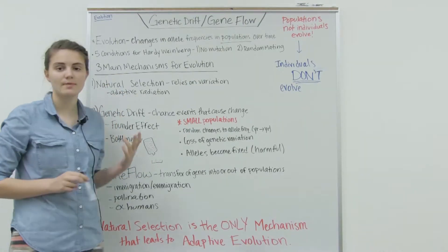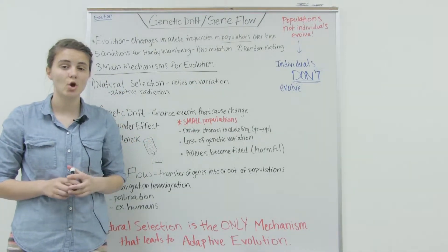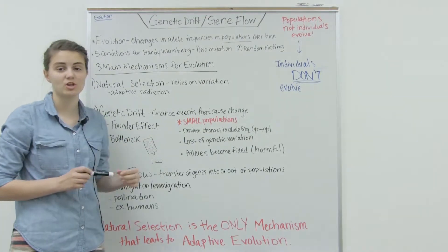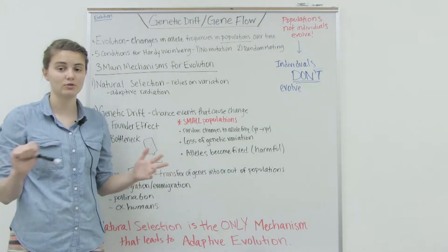When we talked about that, we said there were five conditions that had to be met, or else Hardy-Weinberg equilibrium was not being met, and that meant that there was evolution going on.